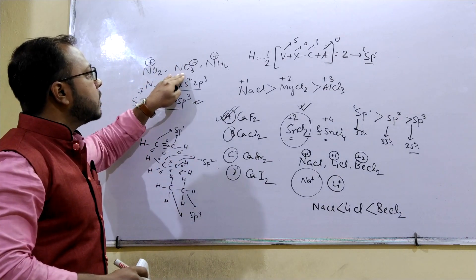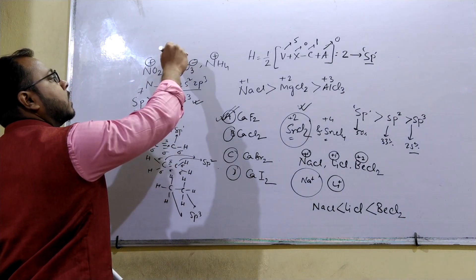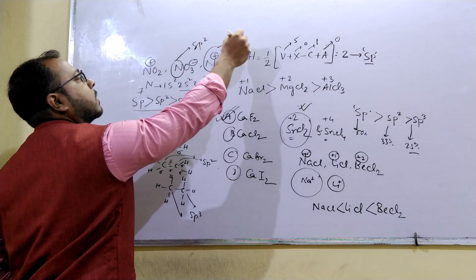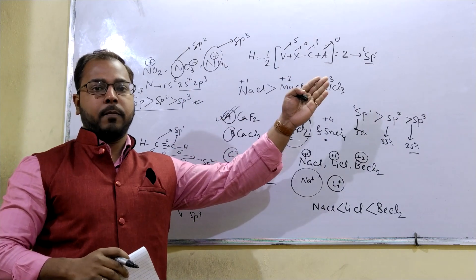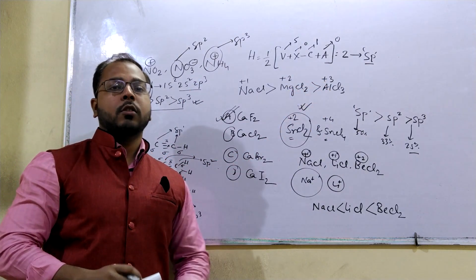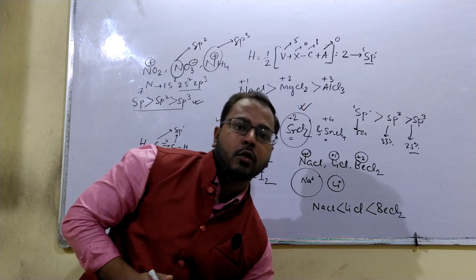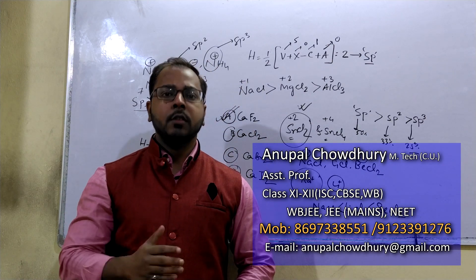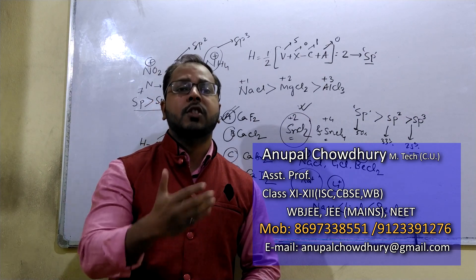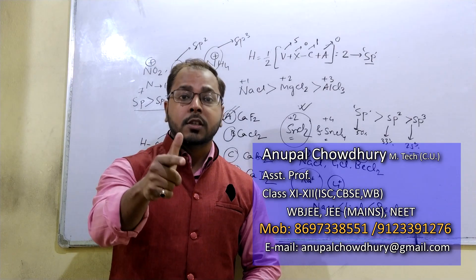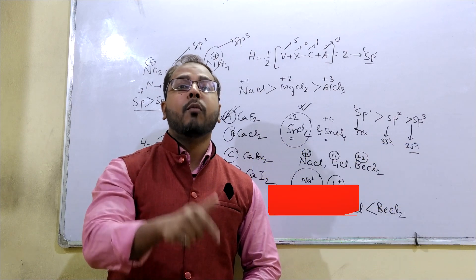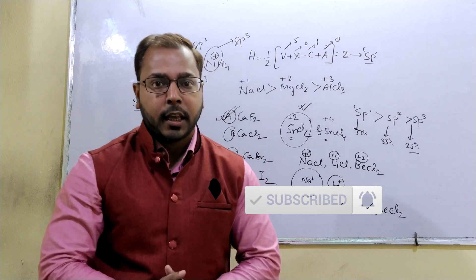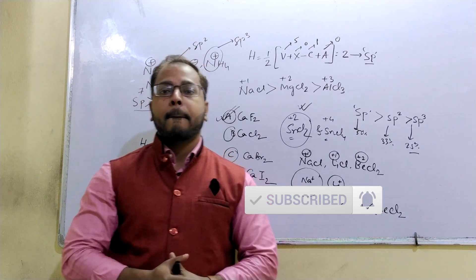Similarly, applying the formula for NO3- and NH4+, we find that nitrogen is SP2 hybridized in NO3- and SP3 hybridized in NH4+. These types of questions related to Fajan's rule and hybridization are very important. If you found this helpful, please like, share, and subscribe to my channel to get more complex topics explained in a simple and simplified manner. Thank you so much.